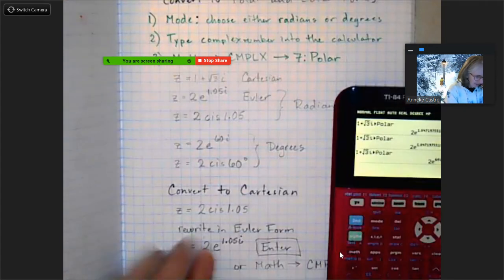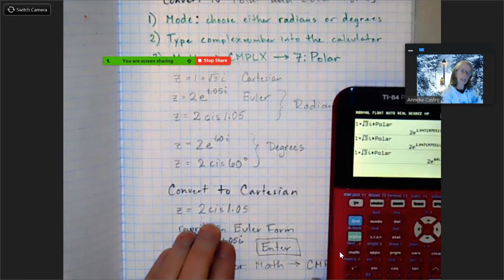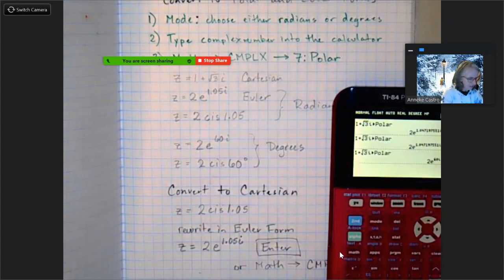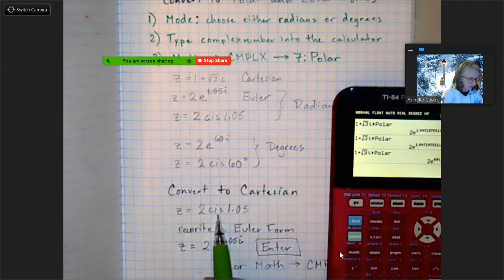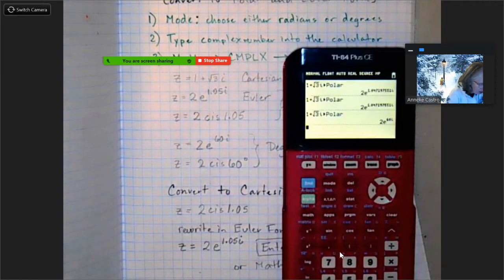We can also go backwards. If I have the answer in polar and I want it in Cartesian I can do that, but I don't know how to type it in like this. So instead I first have to convert it to Euler form. So here's my 2 cis 1.05, and Euler form becomes 2e^(1.05i), and check out what happens.